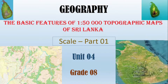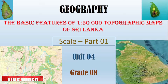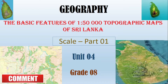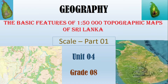Geography — the basic features of 1:50,000 topographic maps of Sri Lanka. Unit 4, Grade 8. First part: scale. In this section of the video, we will be looking at only the scale, 1:50,000. I have divided this presentation into four parts: the first part on scale, the second part on conventional signs, which are very important to identify different features on the 1:50,000 topographic maps, and the third and fourth parts covering physical features and cultural features.